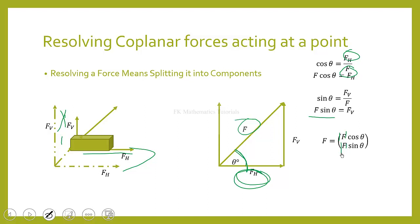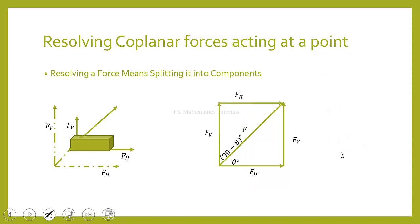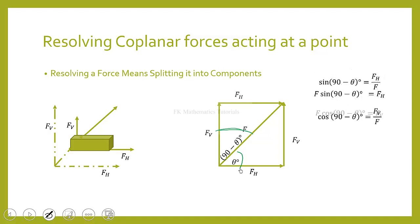That is when we use the triangle below the force. We may also use the upper triangle, in which case we need to find the complementary angle, which is 90 minus θ. Following a similar procedure, the upper triangle gives us the x-component as F sin(90° − θ) and the y-component as F cos(90° − θ).